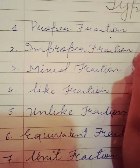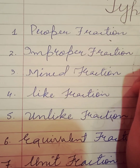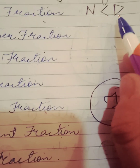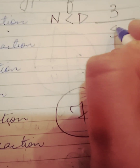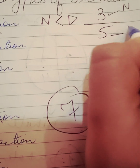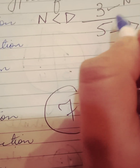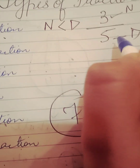First, we will discuss proper fraction. In a proper fraction, the numerator is less than the denominator. For example, if we take the fraction 3 divided by 5 — what is the numerator? 3. What is the denominator? 5. The numerator is smaller than the denominator, so this is a proper fraction.